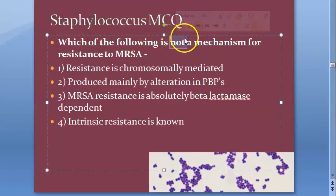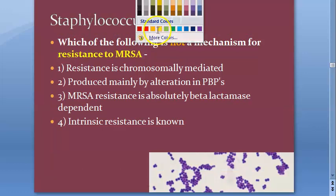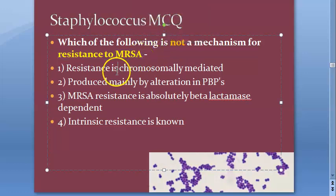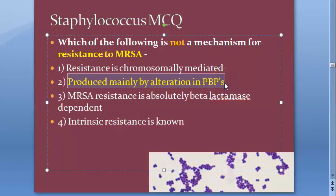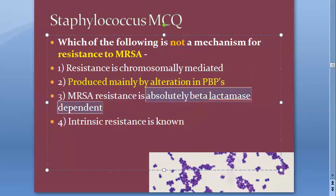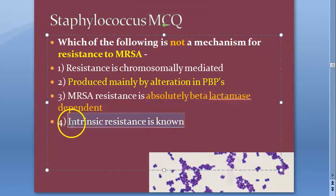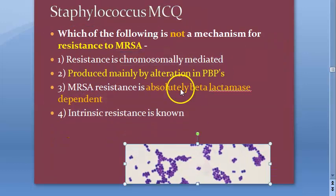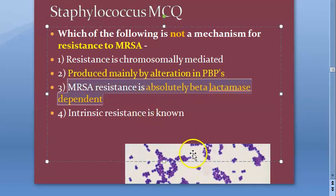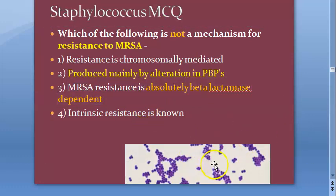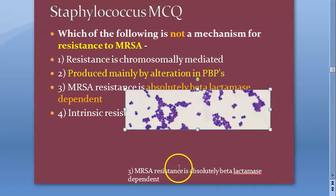Which of the following is not a mechanism for resistance in MRSA? Options include: chromosomally mediated; produced mainly by alteration in penicillin binding proteins (PBPs) — this is the actual mechanism; absolutely by beta-lactamase; intrinsic resistance. The wrong statement is 'absolutely by beta-lactamase' — it is not beta-lactamase dependent; it is actually the altered penicillin binding protein. So that is the answer.